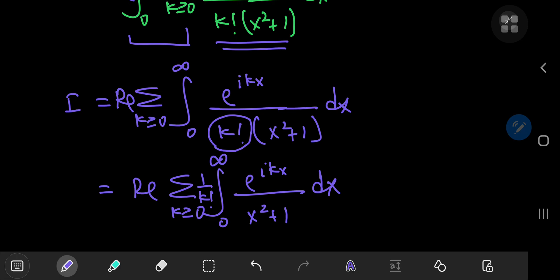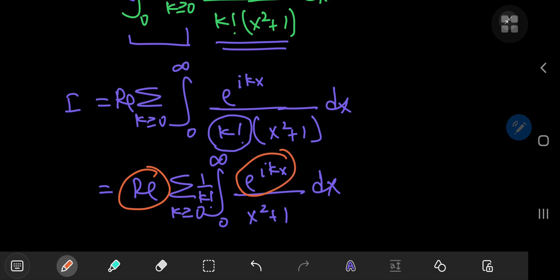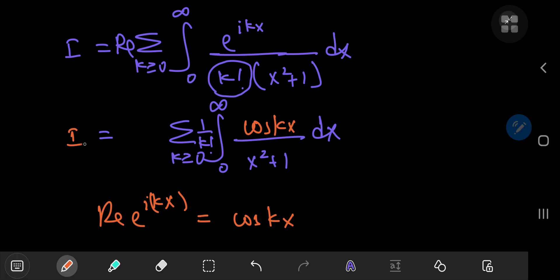Now, what I want to do is that I want to get rid of this complex number notation. So I'm going to go in the reverse direction from Euler's formula. The real part of e to the ikx equals the cosine of kx. So, replacing this with the cosine of kx, then we get a familiar-looking integral here.